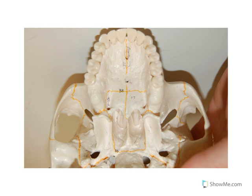Some of the other things that we can see here: the foramen ovale of the sphenoid bone here, a little foramen lacerum here. You can actually see the temporal process of the zygomatic bone here, and then the zygomatic process of the temporal bone coming off there.